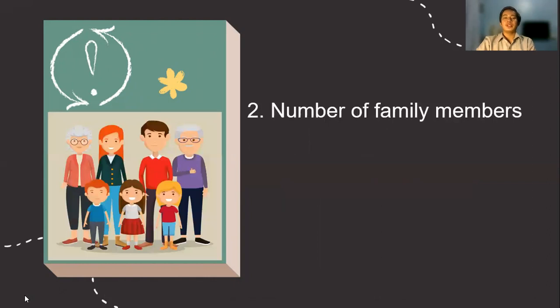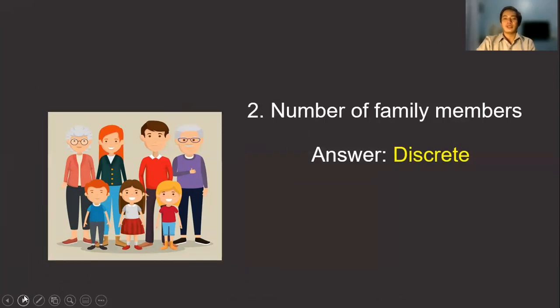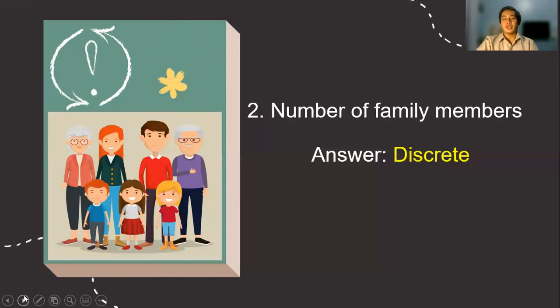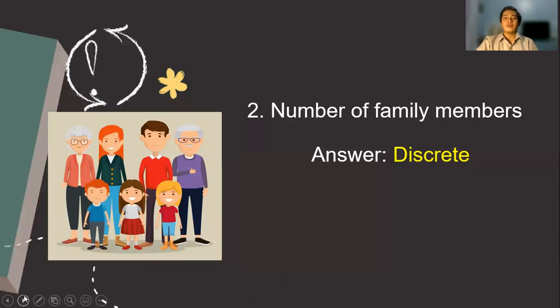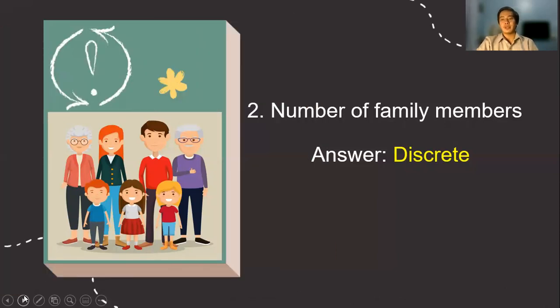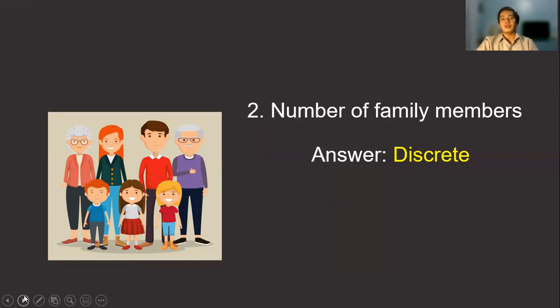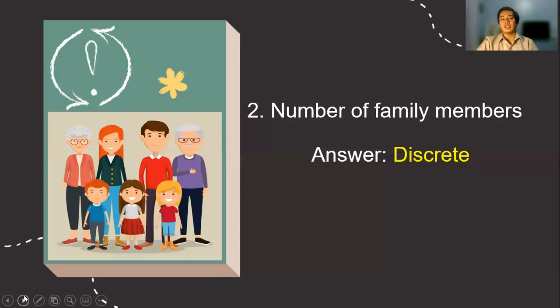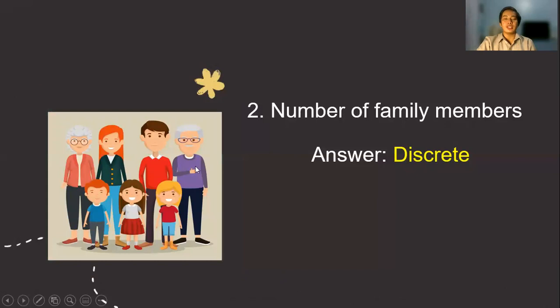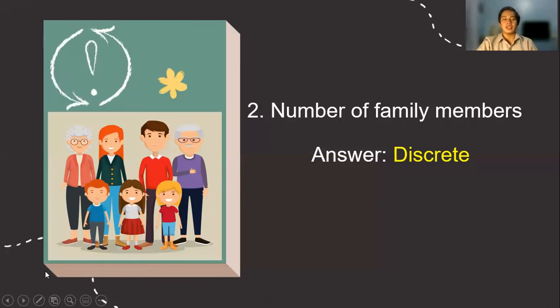Number two, the number of family members. The correct answer is discrete. So notice that when we count family members, there's no such thing as there are 4.5 members in our family. So we cannot say that we have a decimal number of family. Instead, we say there are 5 in our family. In this case, counting the number of members in the family, there are 7 in this figure. So that is discrete.